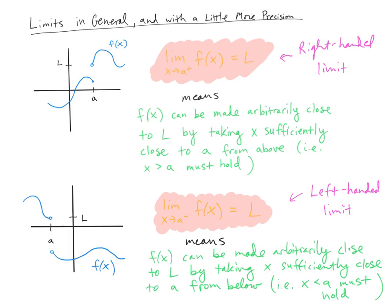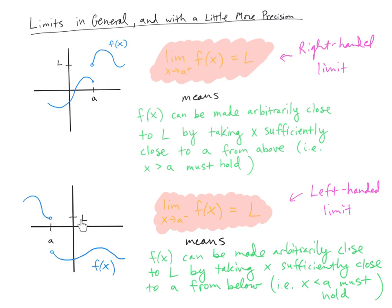We have an analogous situation for the left-hand limit. Approaching a from the left of our function f, we see it limiting to the value l. The value of f of x can be made arbitrarily close to l by taking x sufficiently close to a, just as before. It doesn't say the function actually achieves the value l at a — our function doesn't even have to be defined at a. As long as we take x sufficiently close to a, the values of the function will be very close to l. Here x is below a, so x less than a holds in this definition.